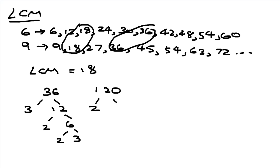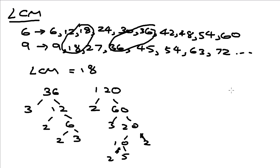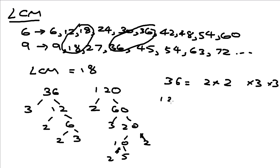For 120, you break it down to 2 and 60, then 3 and 20, then 10 and 2, and finally 2 and 5. So 36 is equal to 2 times 2 times 3 times 3, whereas 120 is equal to 2 times 2 times 2 times 2 times 3 times 5.